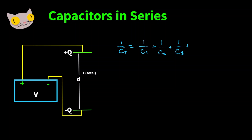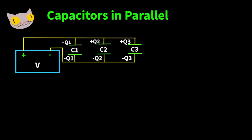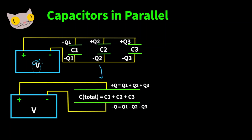It doesn't matter how many capacitors there are — this can go on for as many as you need. Now let's talk about capacitors that are in parallel. Here we have three capacitors and each one of them is directly connected to our voltage source. The equivalent capacitor has a larger plate area and therefore it can hold more charge than the individual capacitors. The total equivalent capacitance is equal to the sum of each of the individual capacitors, because each individual capacitor is hooked up to the voltage source.